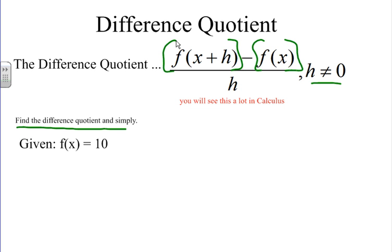We are actually using two of the same function but inputting two different variables. This is saying: use function f — remember, inside the parentheses is the input — we're inputting x plus h into function f, whatever that may be. Then we're subtracting f of x, so function f with x inside, and then dividing by h. H is a variable; you'll learn what h represents more in calculus.